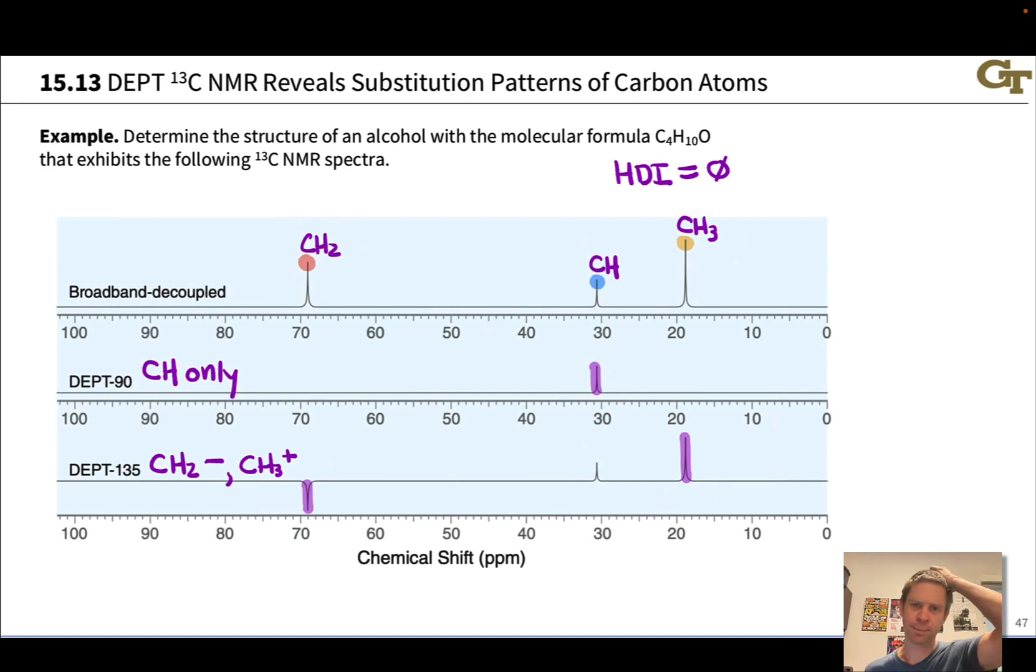How do we begin building out the molecule? We haven't thought about integrations because we typically don't think about integrations in carbon spectra. But we haven't accounted for all the carbons, right? There are only three signals here, so at least one of these has to correspond to two chemically equivalent carbons, so that we end up with a total of four carbons in the molecular structure.